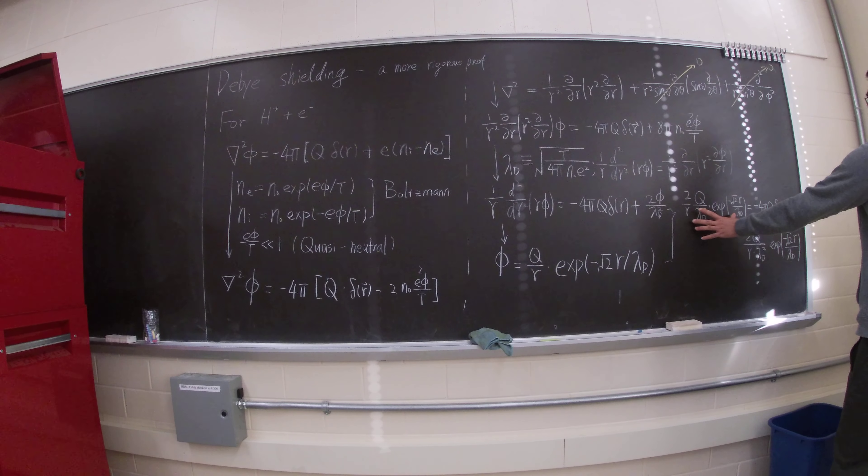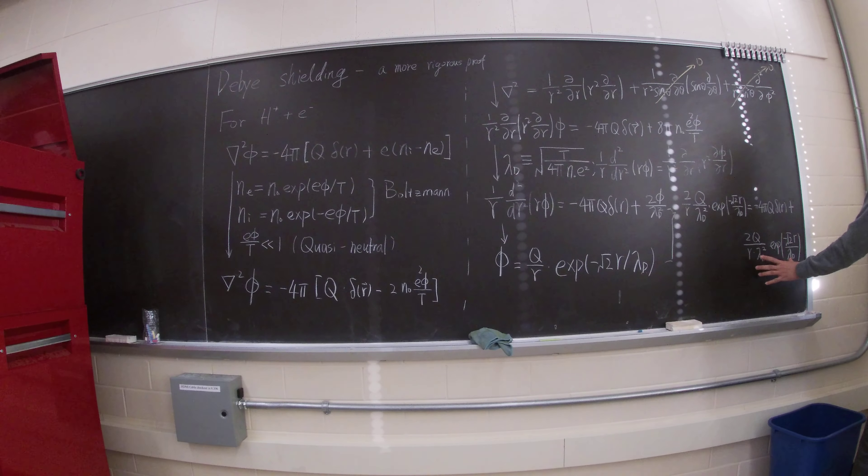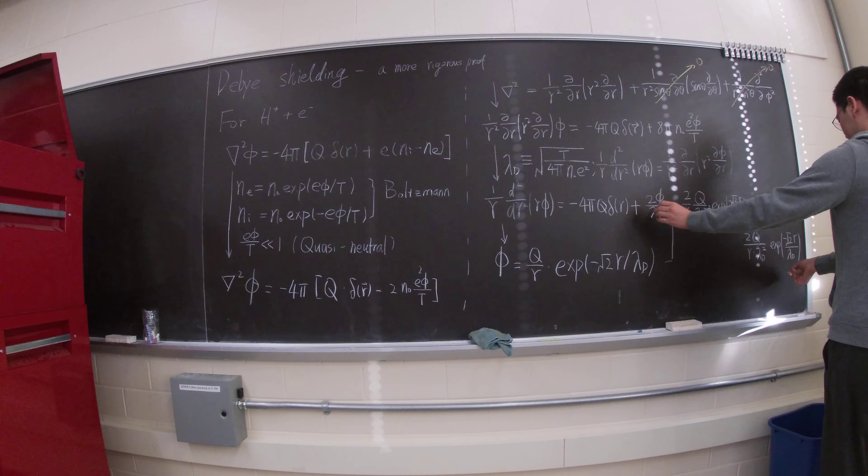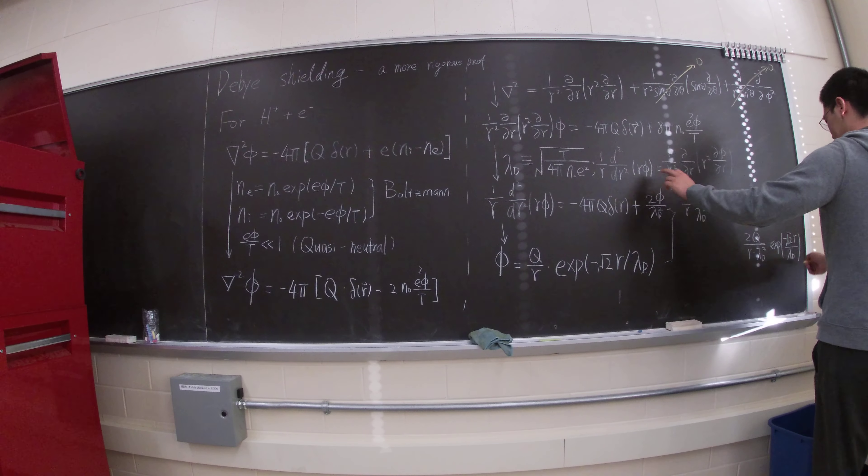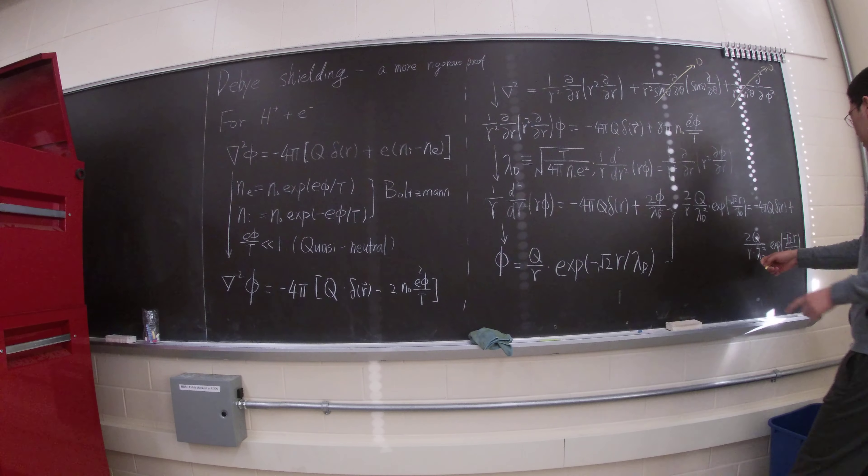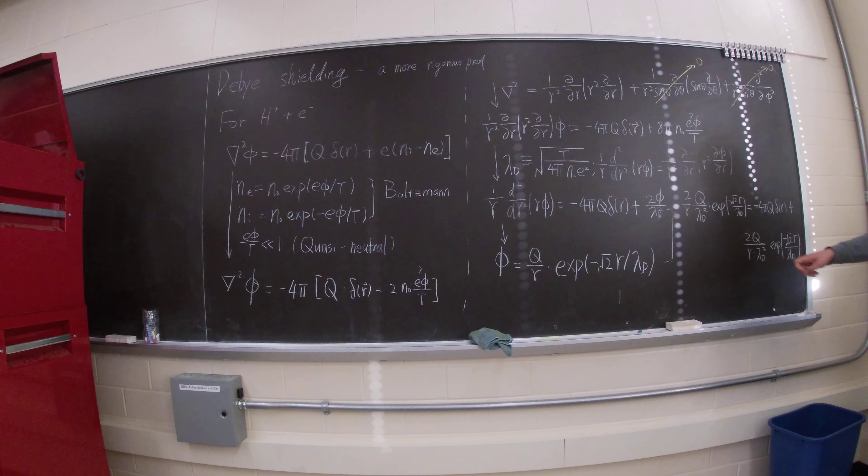So, the left hand side, you plug it in. It's this. This is the delta function. And here, it's basically the same thing, but add another delta lambda_d squared. As you can see, when r is not zero, then this matches, and when r is zero, then we can consider this as a singularity, because that's a test particle. Yeah, that's how it works.